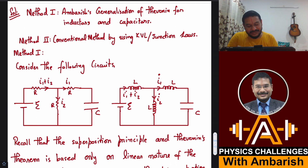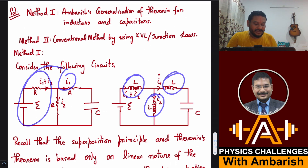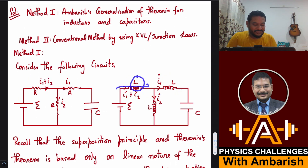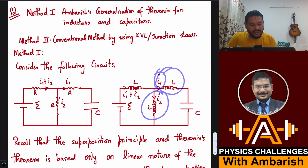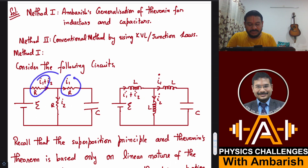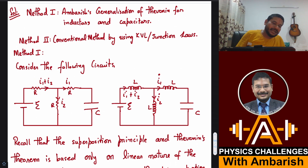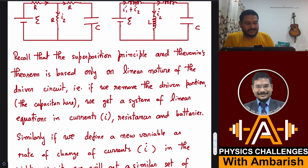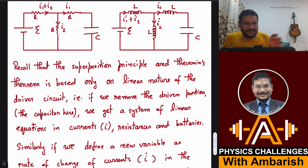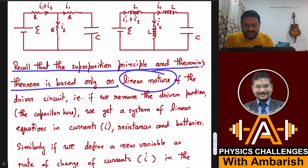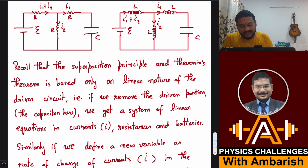Suppose instead of three resistors I had three inductors: the potential drops would be L·İ₁, L·İ₂, and L·(İ₁+İ₂) — pretty similar to resistor potential drops, but with the variable changed from I to İ. Recall that the superposition principle and Thevenin's theorem are based only on the linear nature of the driver circuit, not the driven circuit.